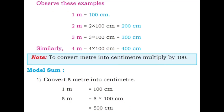Let's check these examples. 1 meter is equal to 100 centimeter. 2 meter is equal to 2 into 100 centimeter, that is 200 centimeter. 3 meter is equal to 3 into 100 centimeter, which is 300 centimeter. 4 meter is equal to 4 into 100 centimeter, which is 400 centimeter. Note: to convert meter into centimeter, multiply by 100.